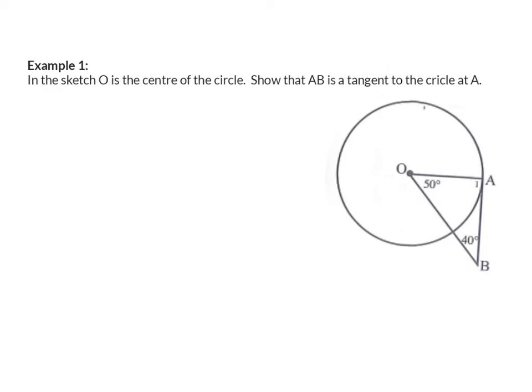Example 1. In the sketch, O is the center of the circle and we are asked to show that AB is a tangent to the circle at point B. And although it clearly looks like AB is a tangent, we need to prove it using geometry theorems.